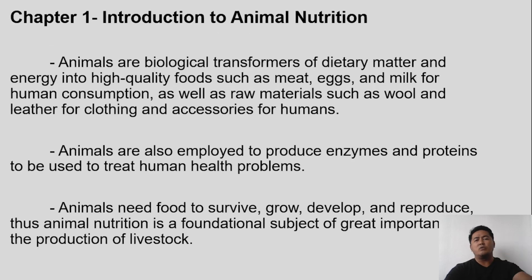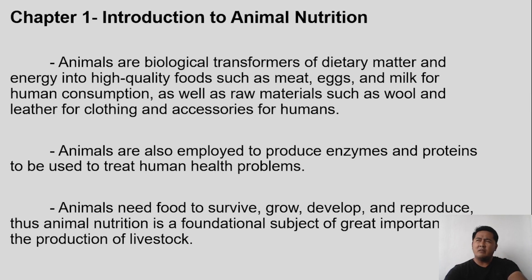Animals are biological transformers of dietary matter and energy into high quality foods such as meat, eggs, and milk for human consumption, as well as raw materials such as wool and leather for clothing and accessories for humans. This means that all animals are transformers — they transform their energy and other nutrients into food which is consumed by humans.